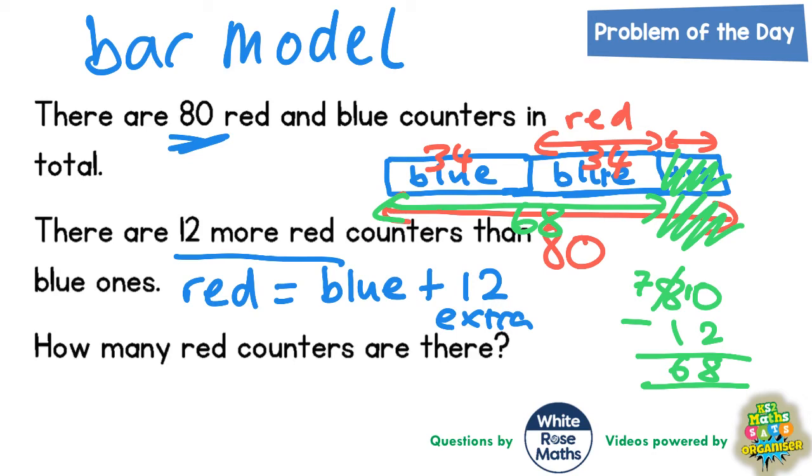So now we can make some conclusions. If there are 34 blue counters then there are 12 more red than blue. So what we have to do is add 12 more onto the 34 which was the extra 12 that we added on originally.